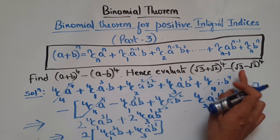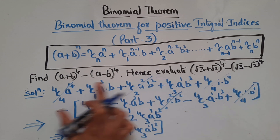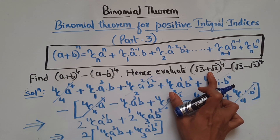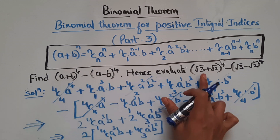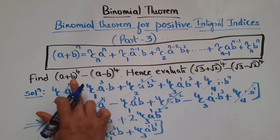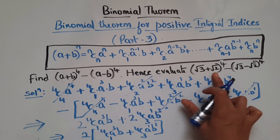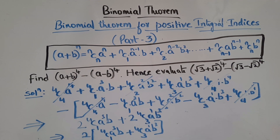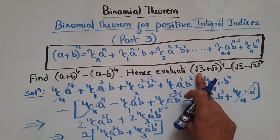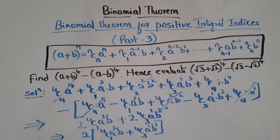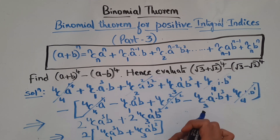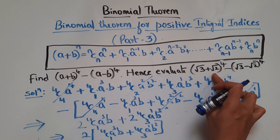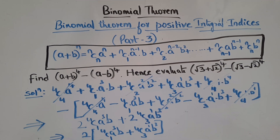Now they say 'hence evaluate.' If you observe, the structure is the same — only the numbers have changed. Here we have a and here we have √3, here we have b and here we have √2, and the power is also the same. So we can substitute a = √3 and b = √2 directly into our result.